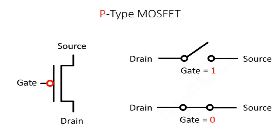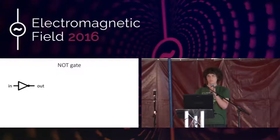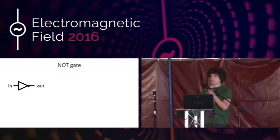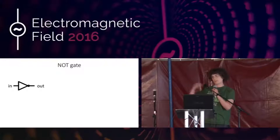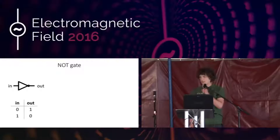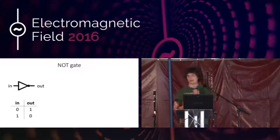Now we have transistors and can switch signals with them, so we use this to make logic gates. We'll discuss the three main logic gates: the AND gate, the OR gate, and the NOT gate. The simplest is the NOT gate. It has one input on the left and one output on the right. It inverts the signal — that's why we also call it an inverter. If you put a logical high or one on the input, a zero will be on the output, and if you put a zero on the input, a one will be on the output. We can put that in a truth table and then look for a way to implement it with transistors.